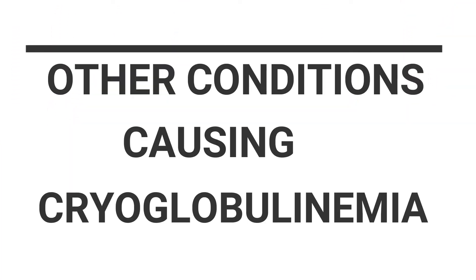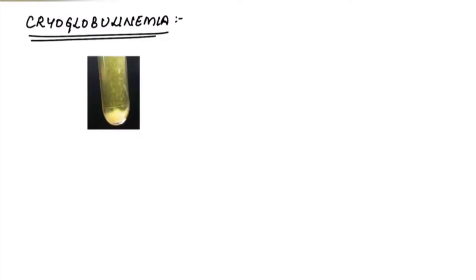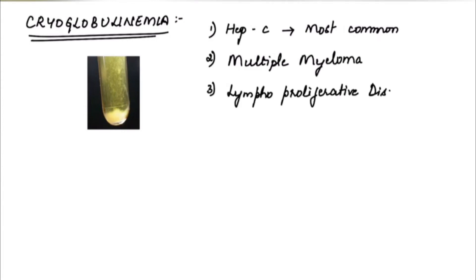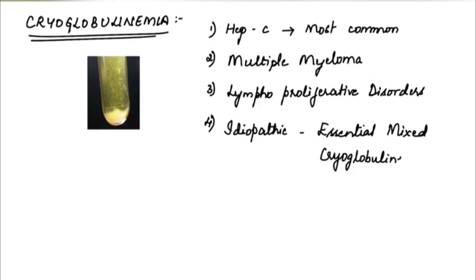Other conditions which can cause cryoglobulinemia — immunoglobulins precipitated at cold temperatures — include hepatitis C (most common), multiple myeloma, lymphoproliferative disorders, and sometimes the cause is unknown, which is known as essential mixed cryoglobulinemia.